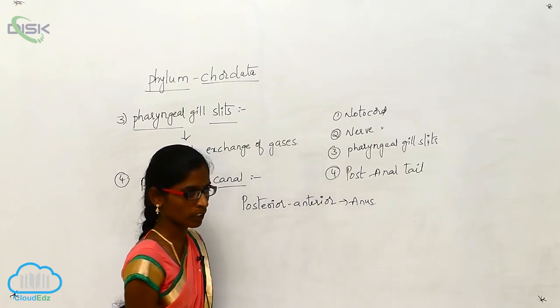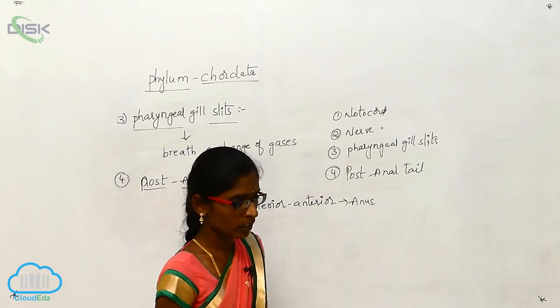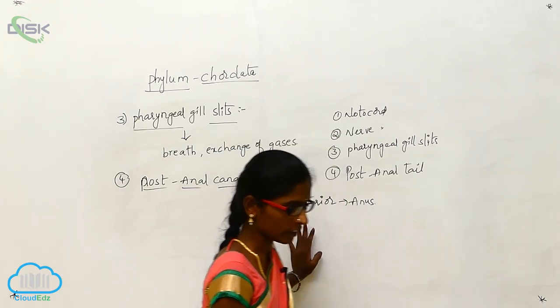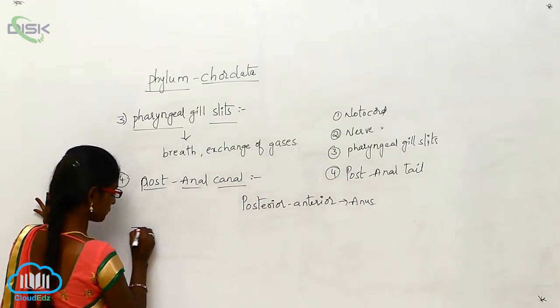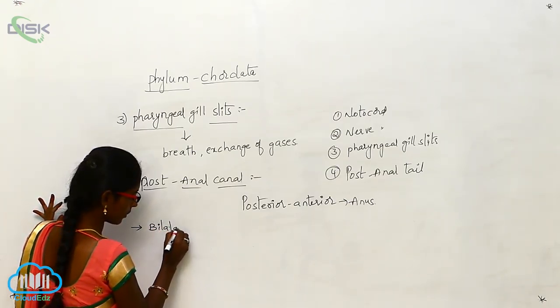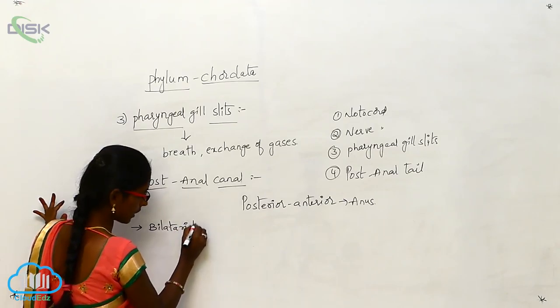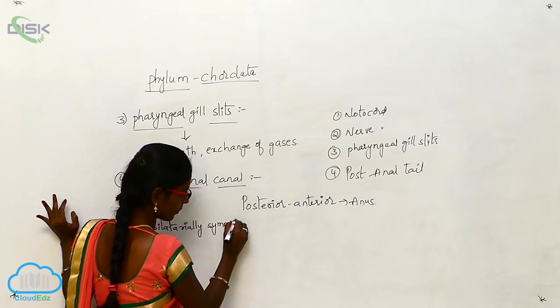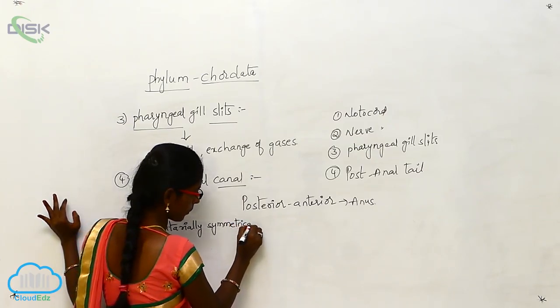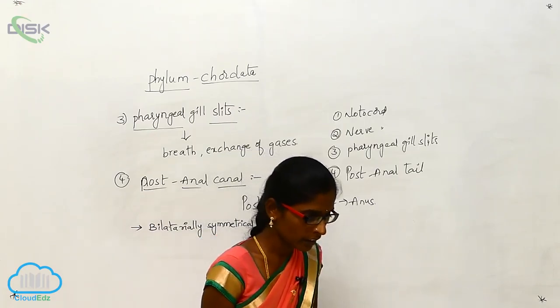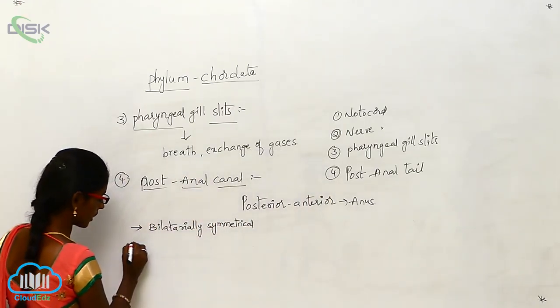So this is the four important characters of the chordates. Another important chordate characters are bilaterally symmetrical and triploblastic condition.